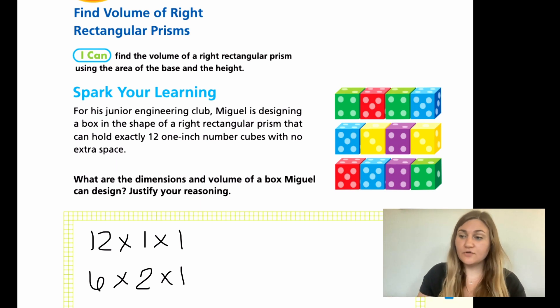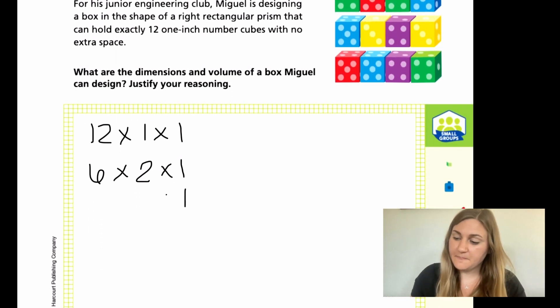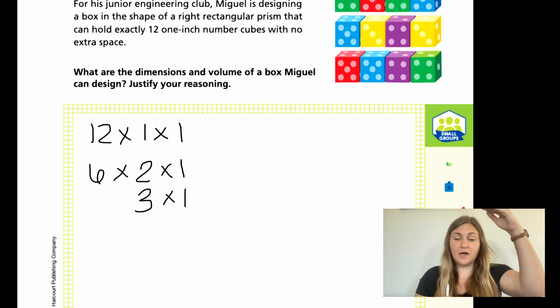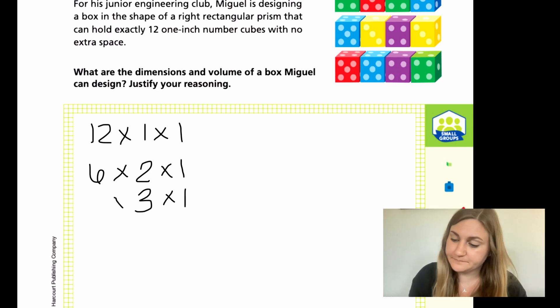If I wanted to move one step further and I wanted 3 rows, so now I'm taking my 12 and now I want 3 rows. How many tall would it be if I had 3 rows? If I had 12 to begin with and I have 3 rows, now I would have 4 blocks high. So 4 times 3 times 1 is still 12.